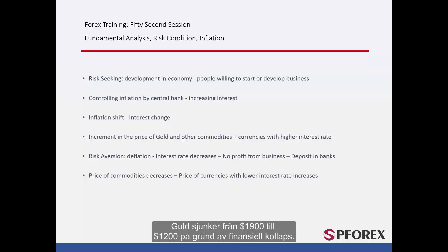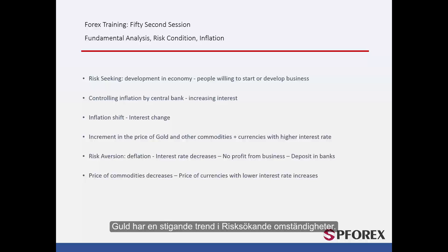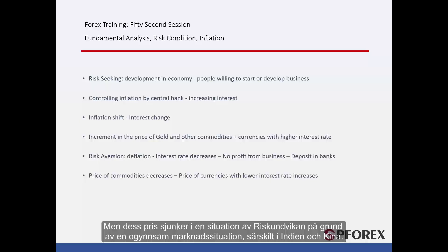Gold decreased from US$1,900 to US$1,200 due to a financial collapse. Gold has an upward trend in a risk-seeking condition; however, its price falls in a risk aversion situation due to unfavourable market conditions, especially in India and China.